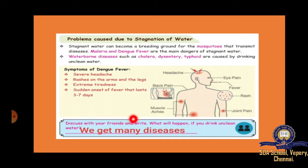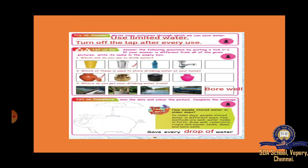If we drink unclean water, we get many diseases. With that, we have finished the second lesson. Today in this class, we are going to learn the book exercise fully. In page 53, we will get this exercise.